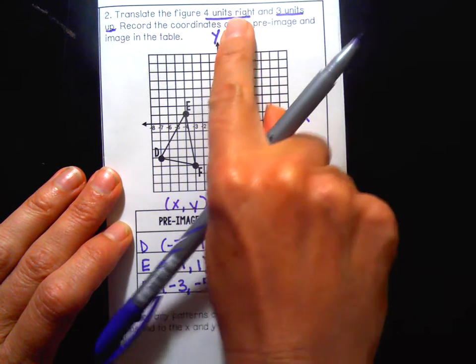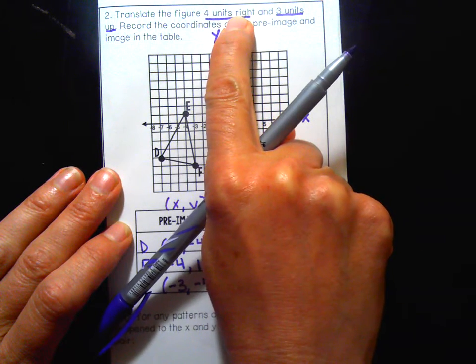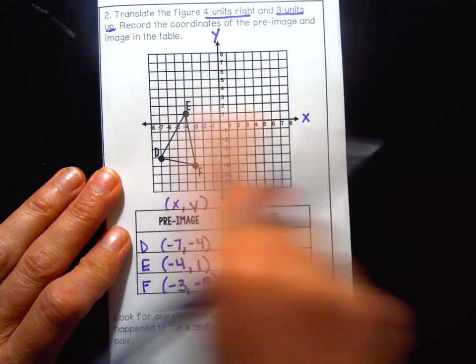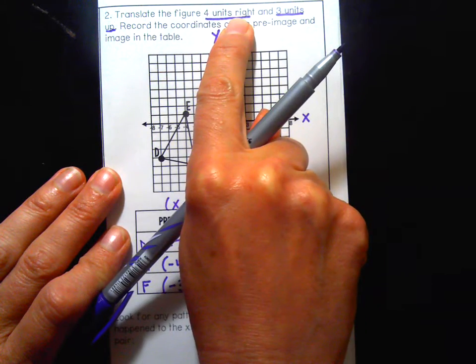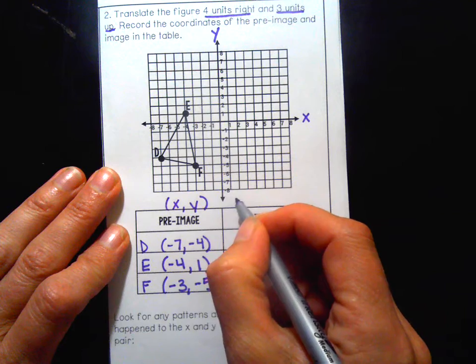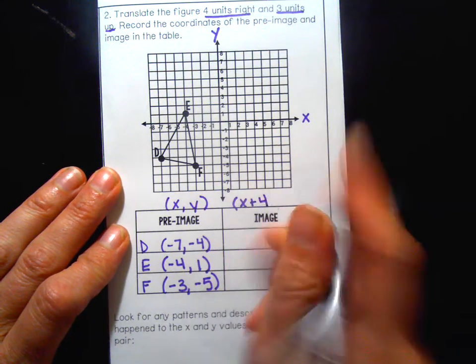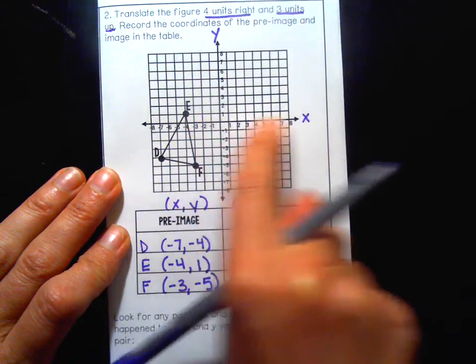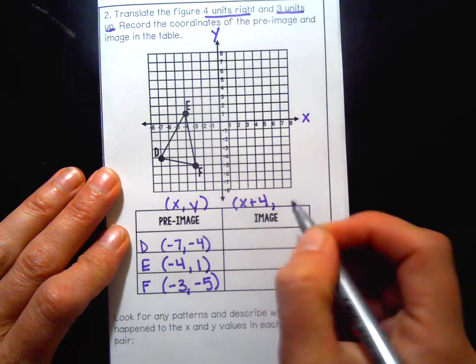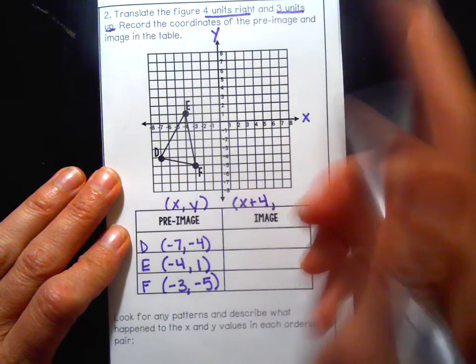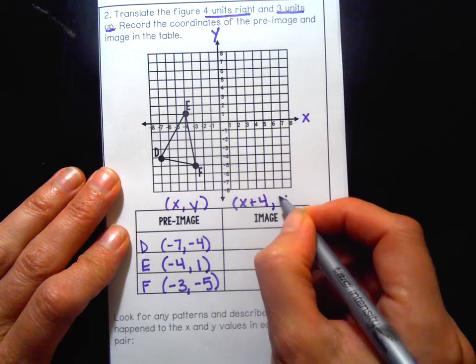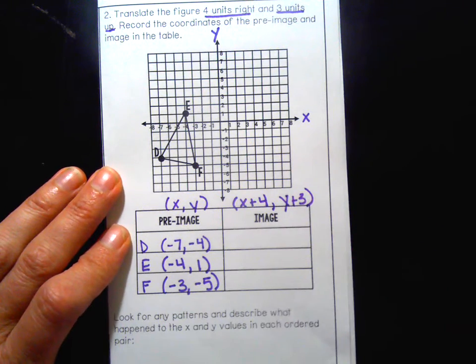I know my instructions for my translations say four units to the right. Again, that's going to be how it moves on the x-axis. And to the right means it's going to get bigger, I'm going to be adding four. So my new rule is going to be add four to x. That's going to move it to the right, move it that direction. And three units up, that's also adding. So I'm going to go y plus three. That's my rule.